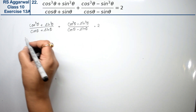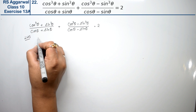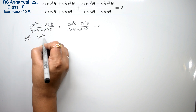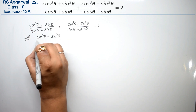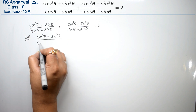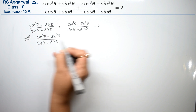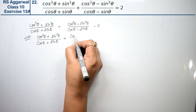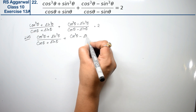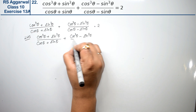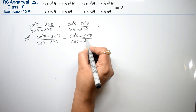How do we do it, friends? Let's take the left-hand side. Left-hand side is (cos³θ + sin³θ) / (cosθ + sinθ) + (cos³θ - sin³θ) / (cosθ - sinθ).